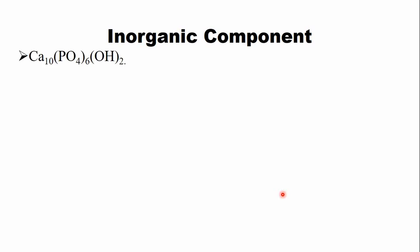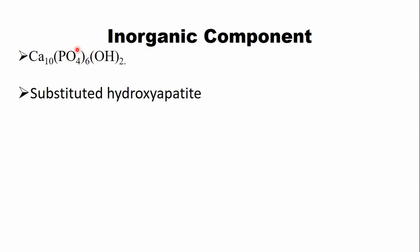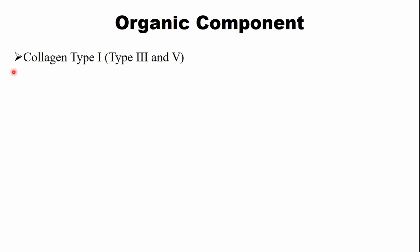The inorganic component, which is 70%, is made up of hydroxyapatite — calcium and phosphate in hydrated form. This hydroxyapatite structure is not pure; there are substitutions such as carbonate, magnesium, and fluoride within it. The organic component is 90% type 1 collagen fibers, with smaller quantities of type 3, type 5, and type 2 collagen also present.